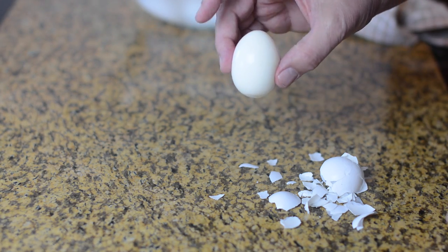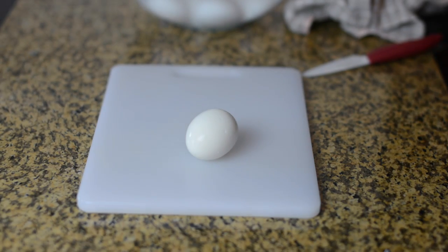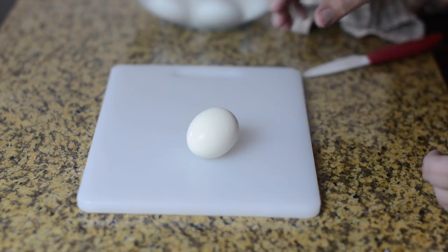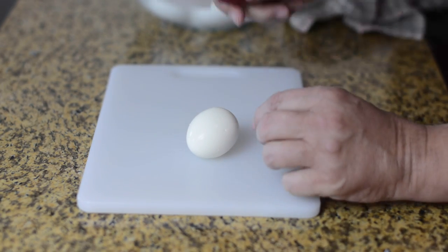There you go. Easy peeled eggs. So we got the shell off pretty easy. Looks pretty good. It's not a bunch of dimples and stuff all torn into it. But how does it look inside?